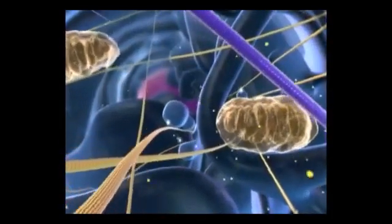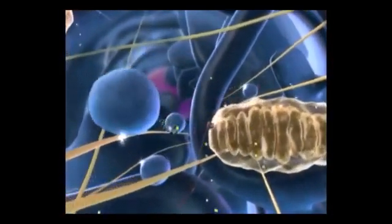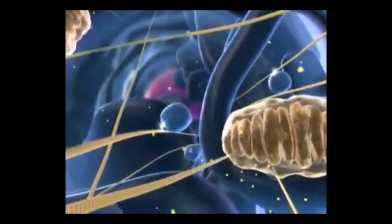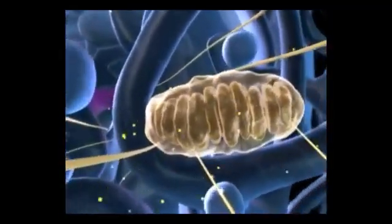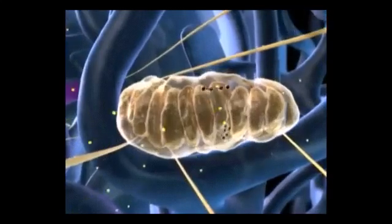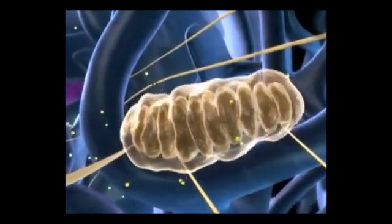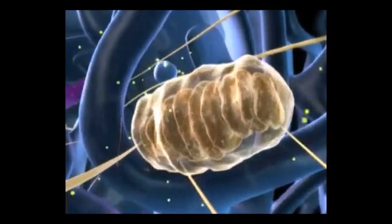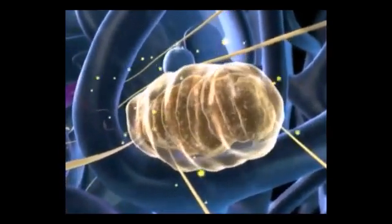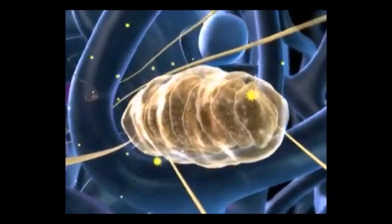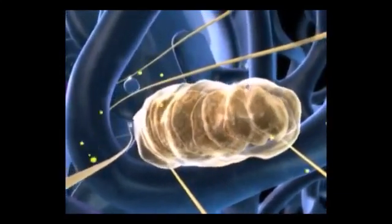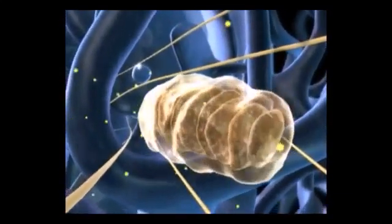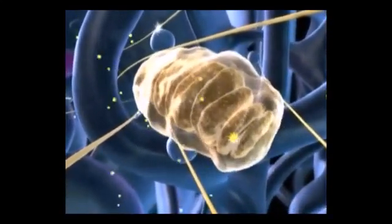For every activity inside the cell, energy is required in the form of ATP molecules, which is produced here in mitochondria. You can notice that the outer membrane is normal and the inner membrane is folded into several cristae. Mitochondria oxidizes the food and releases energy in the form of adenosine triphosphate, which is ATP. This ATP is used and stored by the cell.